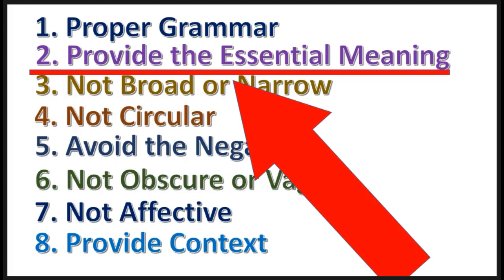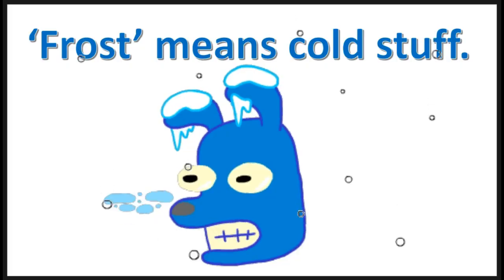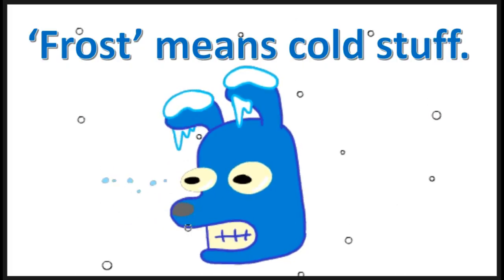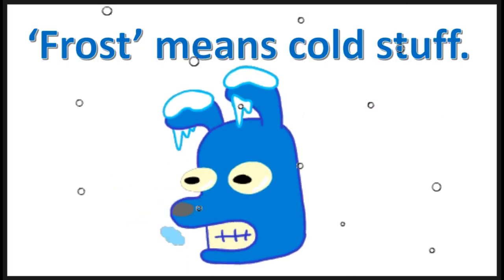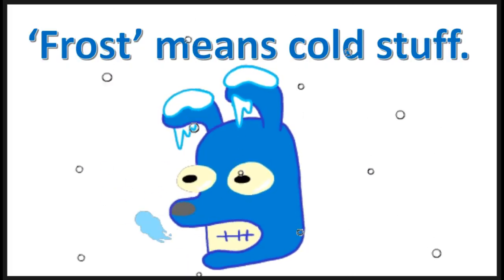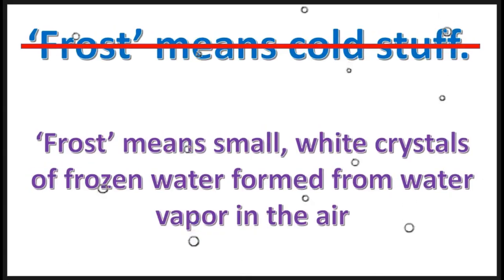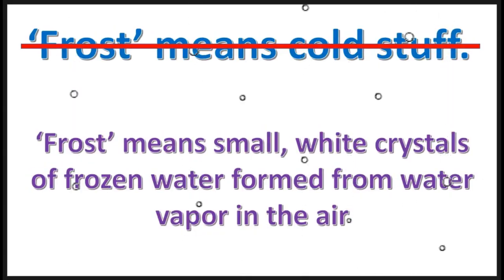Rule number two: a lexical definition should provide the essential meaning. Now here's an example that does not provide the essential meaning. It should be this way — this definition is better.